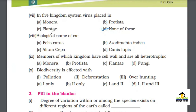MCQ number 8: Biological name of cat — A. Felis catus, B. Azadirachta indica, C. Allium cepa, D. Canis lupus. The right answer for this MCQ is A. Felis catus.